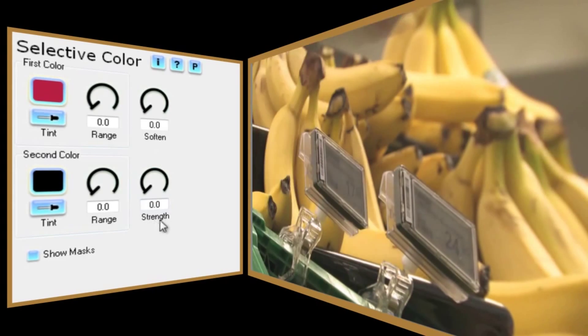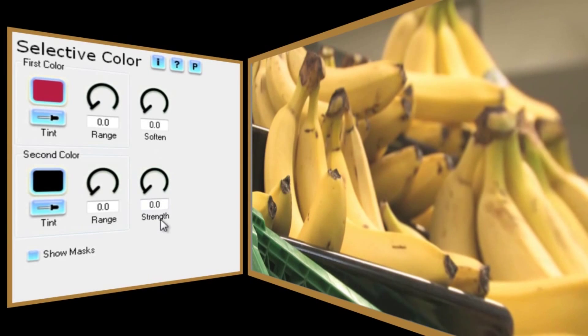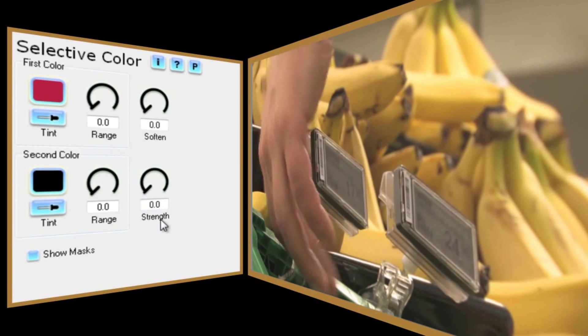This is the Strength control, which at zero has no effect and at 100 means that only the selected colors will be displayed, with everything else being shown in shades of grey.